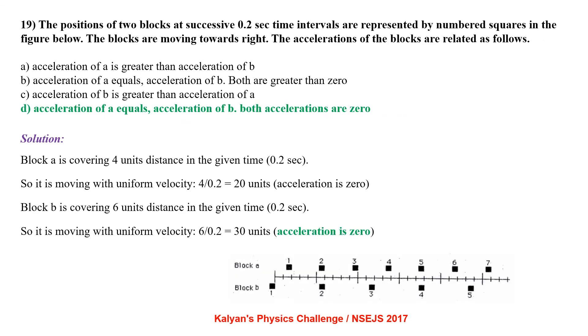The positions of two blocks at successive 0.02 second time interval are respectively represented by numbered squares in the figure below. The blocks are moving towards right. The accelerations of the blocks are related as follows. Acceleration of A is greater than acceleration of B. Acceleration of A equals acceleration of B. Both are greater than zero. Acceleration of B is greater than acceleration of A. Acceleration of A equals acceleration of B. Both accelerations are zero.